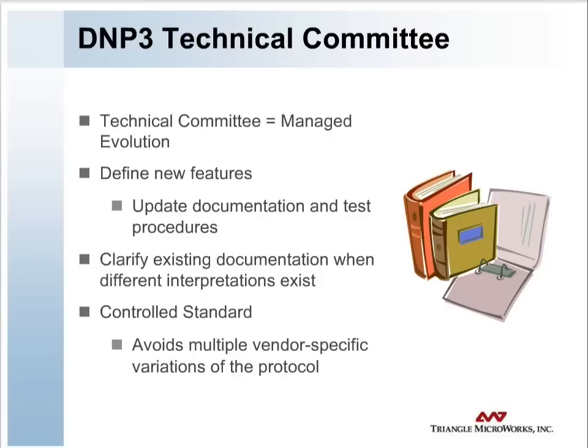In January 1995, the DNP Users Group Technical Committee was formed to review enhancements and to recommend them for approval to the General Users Group. One of the most important tasks of this body was to publish the DNP Subset Definitions Document, which establishes standards for scaled-up or scaled-down implementations of DNP-3.